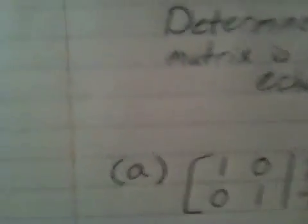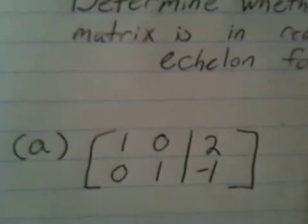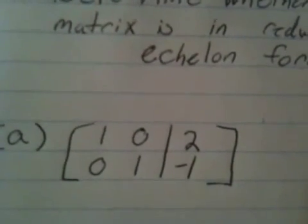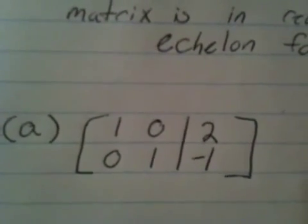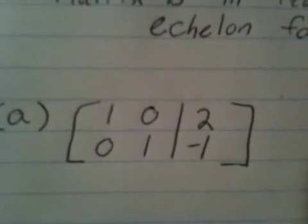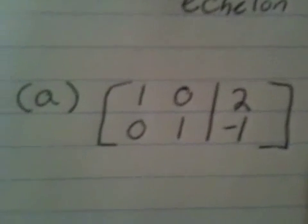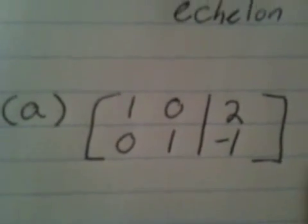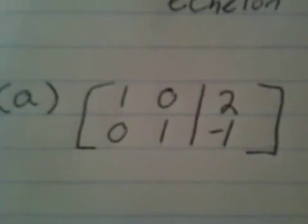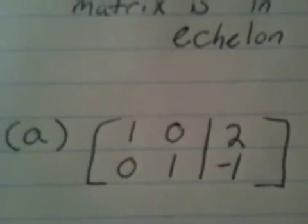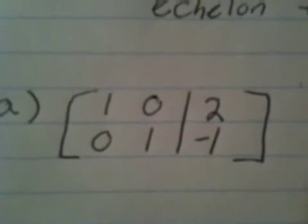In our first matrix, A, we have 1, 0, 2 in the top row, and 0, 1, negative 1 in the bottom row. The first non-zero number in each row must be 1 — we have 1 as the first non-zero in the top row, and 1 as the first non-zero in the bottom row. Both satisfy criteria one.